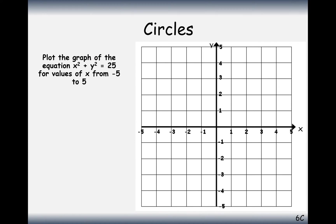Before we get started, what I want to consider is the coordinates that follow this rule: x squared plus y squared equals 25. Let's consider the basic coordinate of 5, 0 first. 5 squared gives us 25, add 0 squared is 0, which equals 25. Also, we'll have 0, 5, because 0 squared add 5 squared is 25.